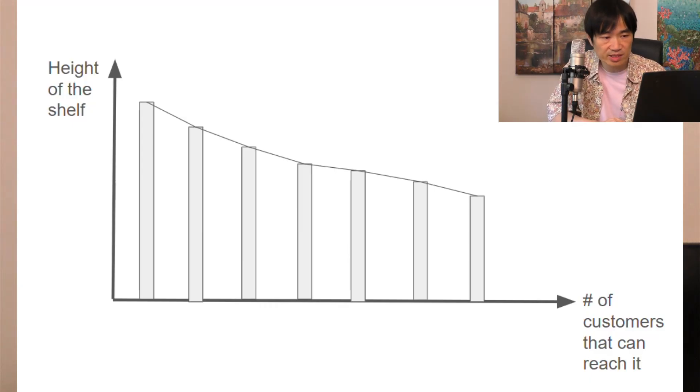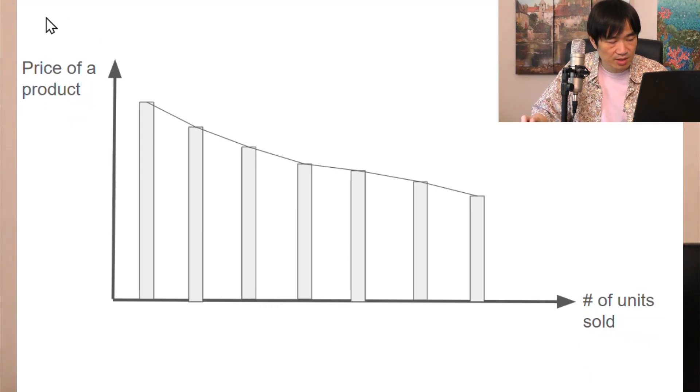Now let's change up the variables. Let's make the vertical axis the price of a product, and then we change the horizontal axis to the number of units that will be sold. So instead of lining up customers based on their heights, we line them up based on how much they're willing to pay for that product.